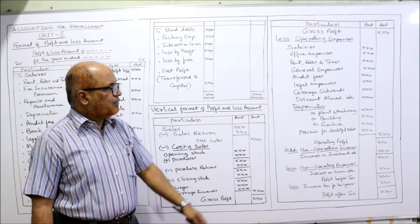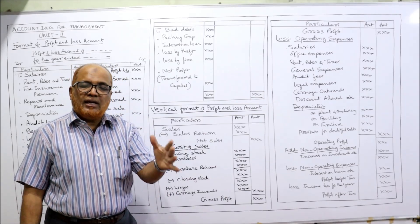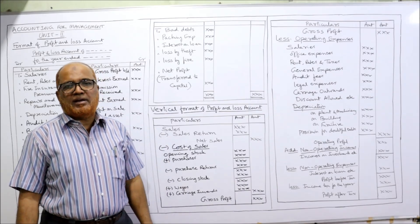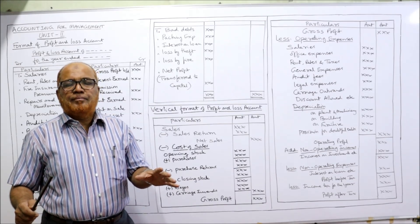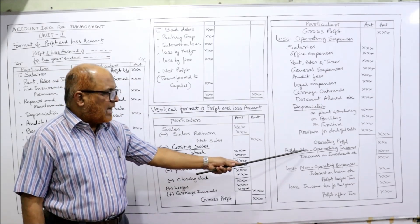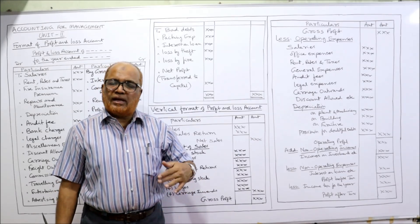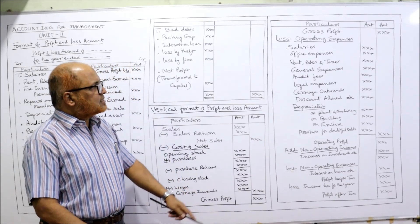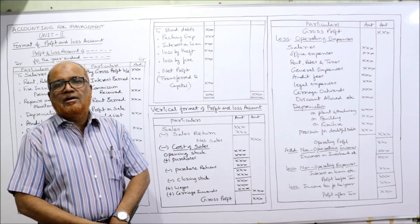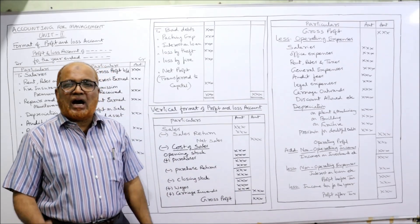Gross profit minus operating expenses gives the operating profit. If there are any non-operating incomes — such as interest on investment or dividend on investment, which are not operating activities — we add them. Then deduct non-operating expenses, such as loss on sale of an asset or interest on borrowed funds. This gives profit before tax. Deduct income tax for the current year and we get net profit after tax.